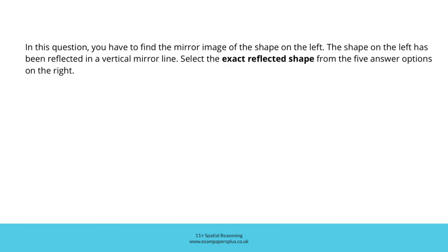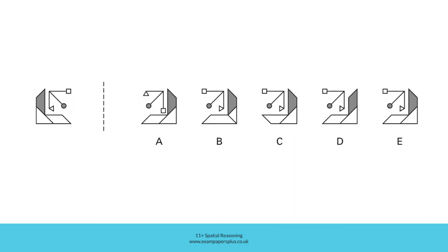Now you can try a second similar question. Remember, in this question you have to find the mirror image of the shape on the left — the shape has been reflected in a vertical mirror line. Select the exact reflected shape from the five answer options on the right. When you're ready, pause the video and try to work out the correct answer within 30 seconds, then resume and we'll check the answer together.